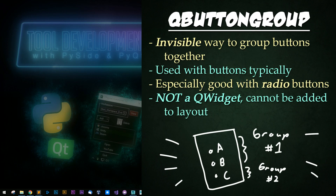QButtonGroup is an invisible way to group buttons together, usually used for regular or toggleable buttons, checkboxes, or radio buttons. For radio buttons, this is particularly useful. QButtonGroup is not a widget, so it cannot be added to layouts or be visible in any way.